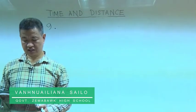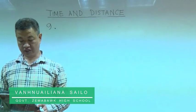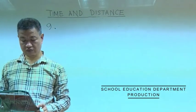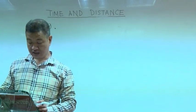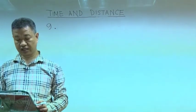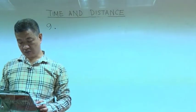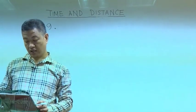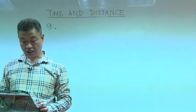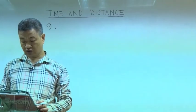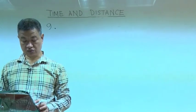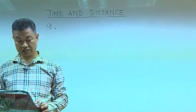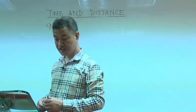Mathieu travels equal distances with a speed of 3 km per hour, 4 km per hour, and 5 km per hour, and takes a total of 1 hour 34 minutes. Find the total distance traveled. Mathieu travels equal distances.